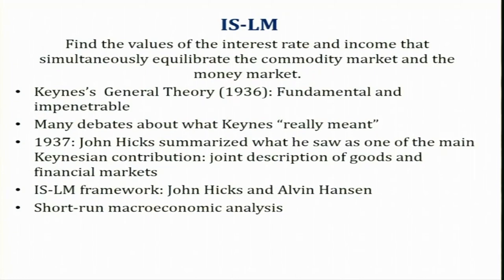So in 1937, John Hicks summarized what he saw as one of the main Keynesian contributions — the joint description of goods and financial markets. This led to the development of the ISLM framework by John Hicks and Alvin Hanson. The ISLM framework is mainly a tool to understand short-run macroeconomics — how changes in fiscal and monetary policy affect different economic variables and finally aggregate demand and GDP.